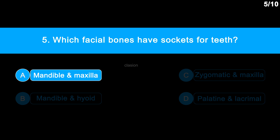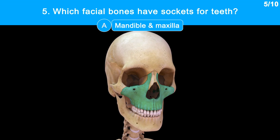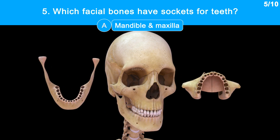The correct answer is Option A: Mandible and maxilla. The maxilla is the upper fixed bone of the jaw, formed from the fusion of two maxillary bones. The mandible is the lower jaw. Each jaw has 16 sockets for teeth.